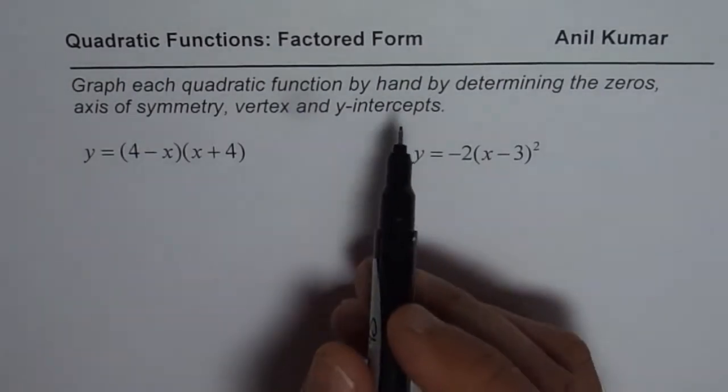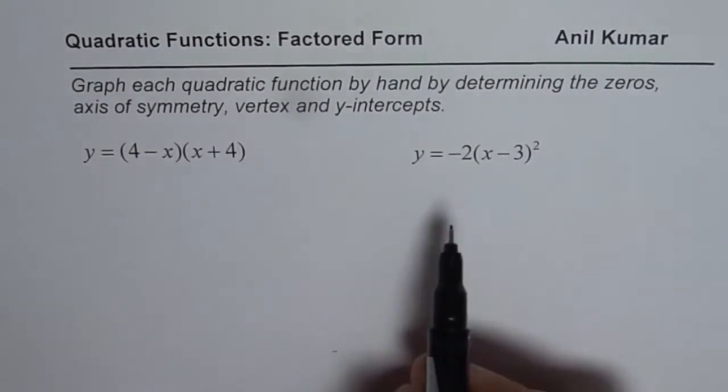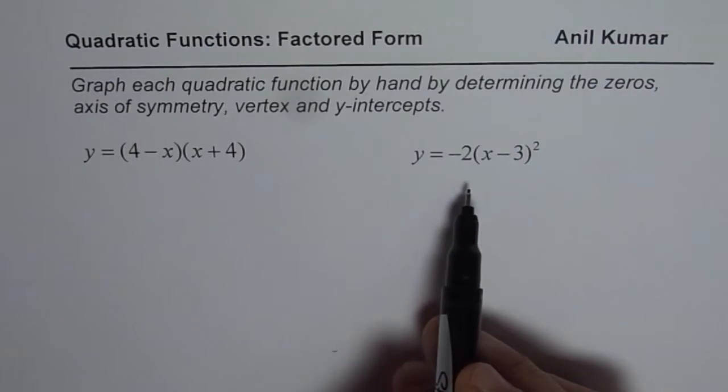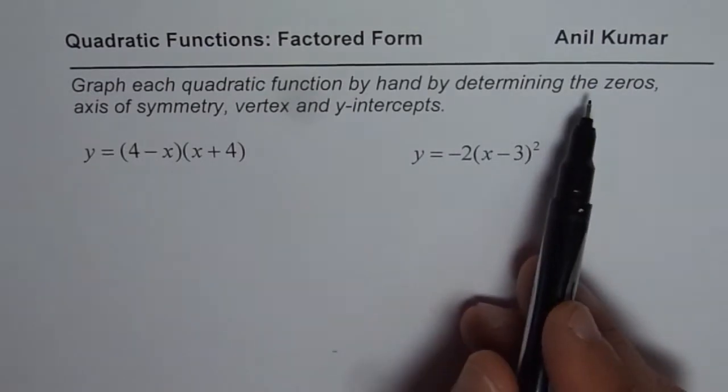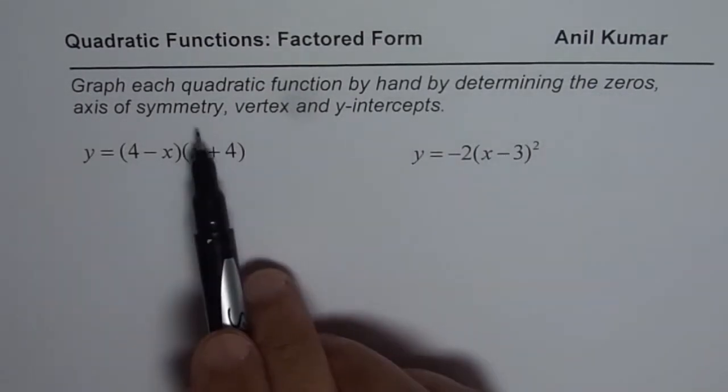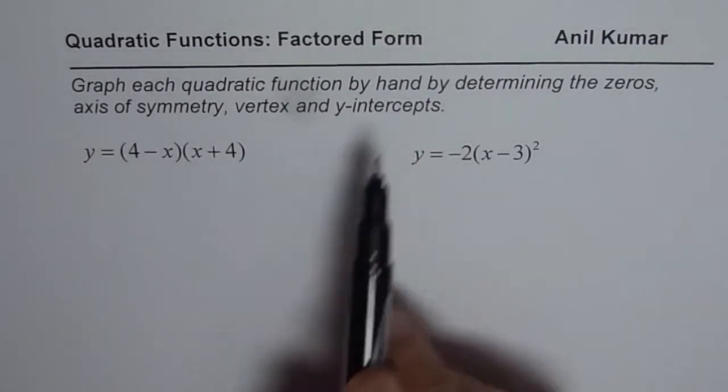You need to sketch a very rough sketch to find the graph of these functions, but you need to calculate all the characteristics which include zeros, axis of symmetry, vertex and y-intercept.